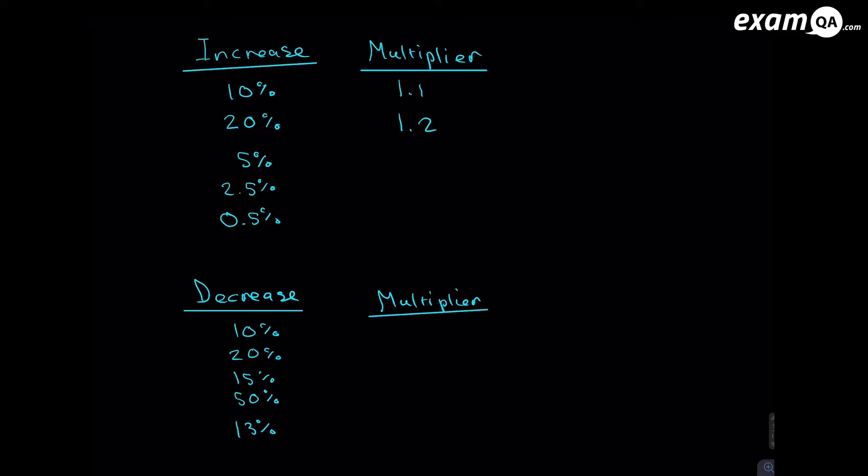20% and that'll be 1.2. So hopefully you're getting the pattern. And then we've got 5%. Now that won't be 1.5, because that'll increase it by 50%. That'll be 1.05. And then you've got 2.5%. So 2% will be 1.02. And of course 5%, half a percent will add a 5 at the end. So 1.025. And then we've got 0.5%, which is a tricky one. It won't be 1.05, because that'll be 5%. So we'll put another 0 and then a 5. And that'll be half a percent, 0.5%.